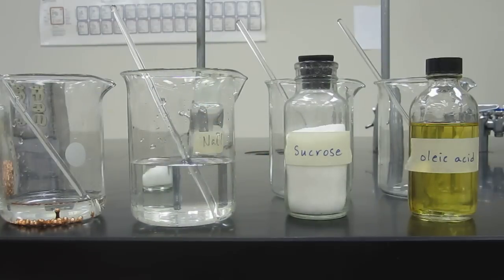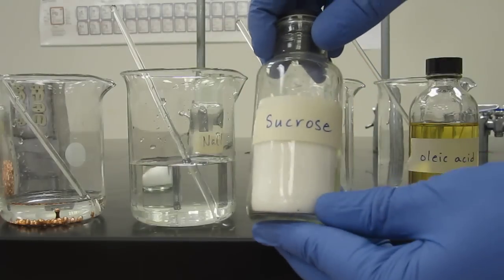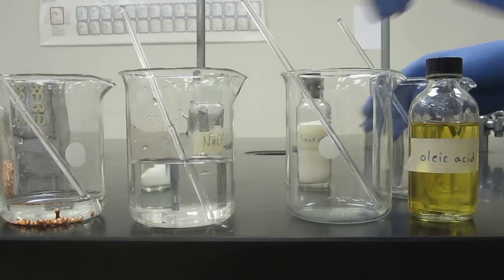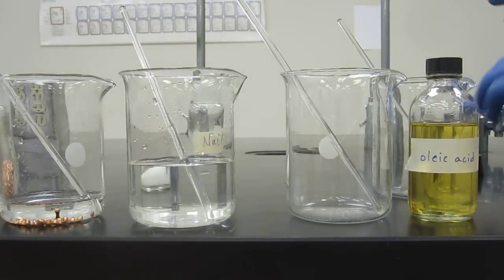So this was an ionic compound. Now let's do a covalent compound, like sucrose. Remember we said this is like pure table sugar. Let's go ahead and do the same experiment with it.